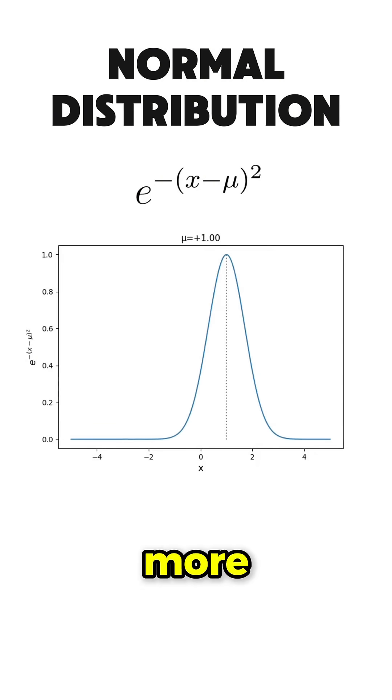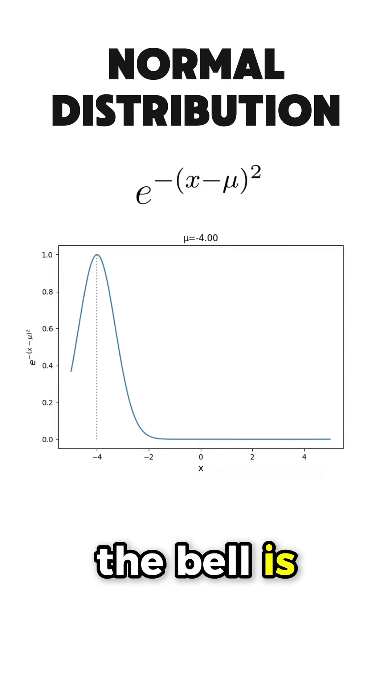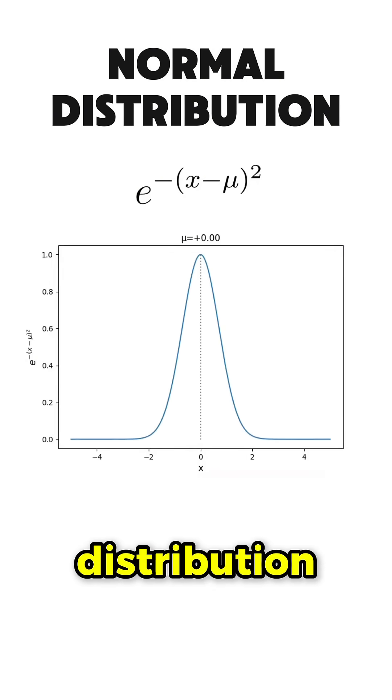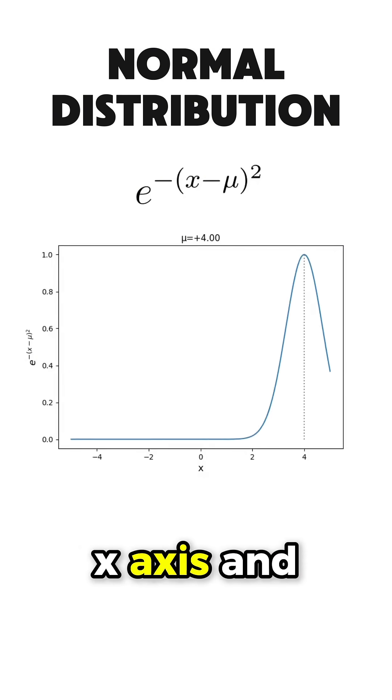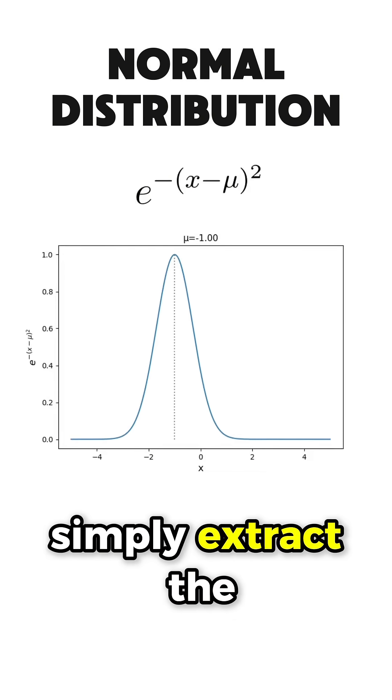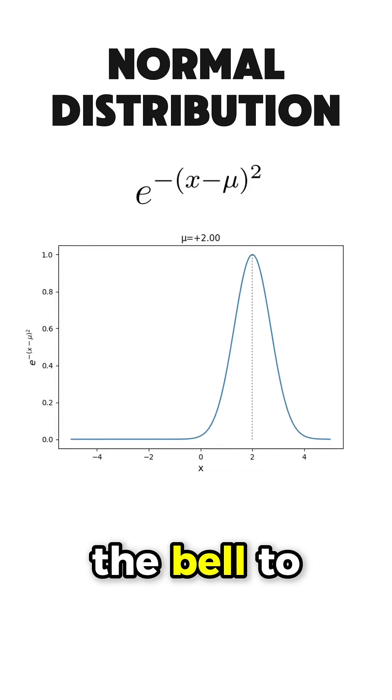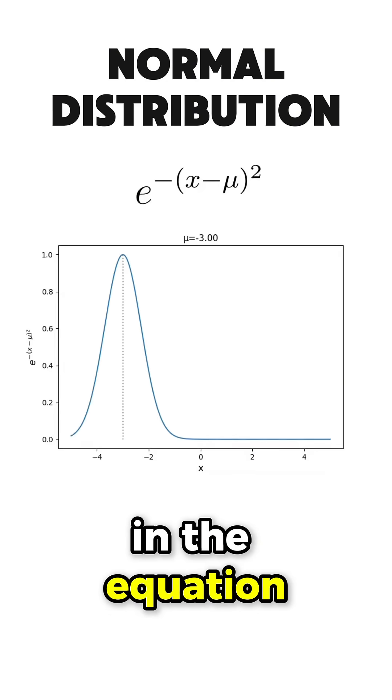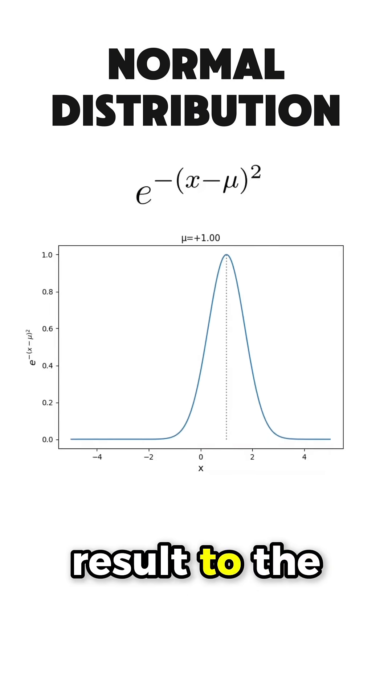Firstly, we would like to have more control of where the center of the bell is, or the mean of the normal distribution, by shifting the x-axis. And how is this obtained? Simply extract the position where we want the bell to be, the variable mu in the equation, before raising the result to the power of 2.